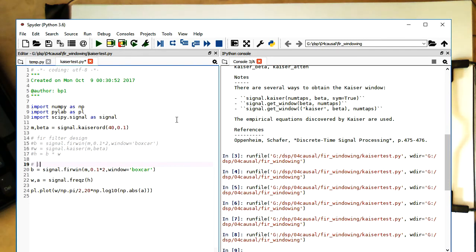So here, firwin with Kaiser window. Then, what is done here that this parameter is directly the beta parameter here.